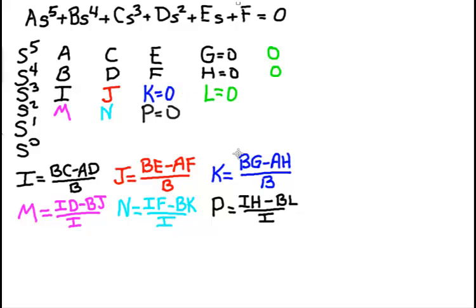If we need to calculate it still, then the calculation is I times H minus B times L divided by I. See the pattern now? Q is zero because there are two zeros to the upper right.